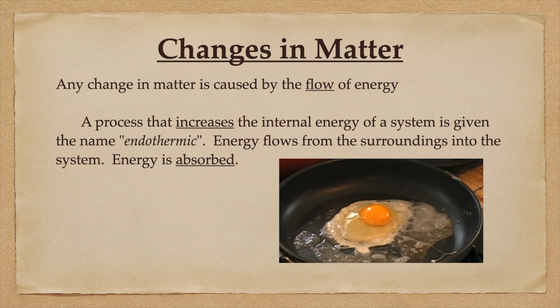A process that increases the internal energy of a system is given the name endothermic. Energy flows from the surroundings into the system or is absorbed. A good example of this would be the frying of an egg, the cooking of a steak, really any cooking process in your kitchen is an endothermic chemical change.